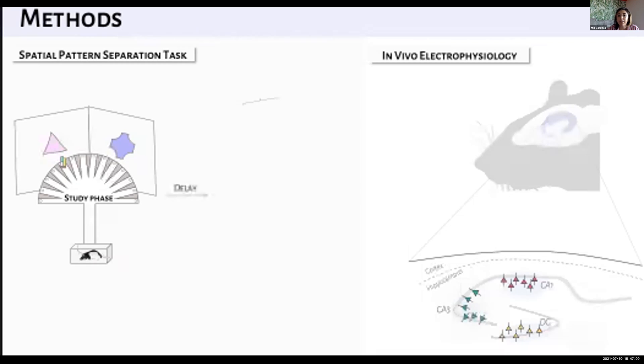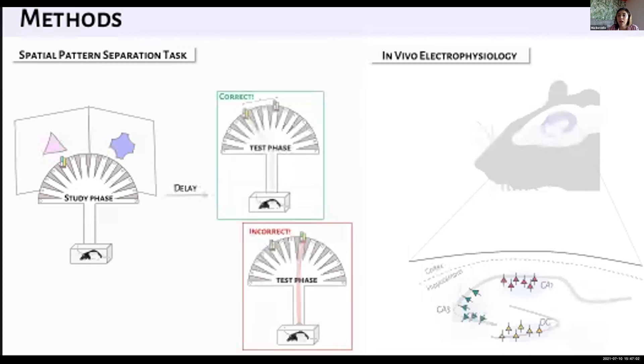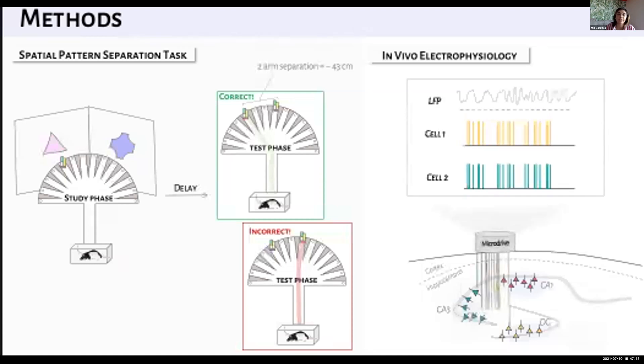We record neural activity during the task using micro drives, which are built in-house and by hand. These drives consist of between 24 and 32 movable tetrodes, which are implanted and slowly lowered into the dentate gyrus. We're able to record single cells as well as local field potentials, which allows us to ask questions about what's going on at different scales during the time points of interest.